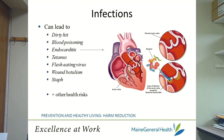Flesh-eating virus or necrotizing fasciitis is from blood-to-blood contact when sharing needles or through contaminants in black tar heroin. Symptoms include redness, pain, and swelling on the site, and eventually decay of flesh around the injection site. It needs to be treated with antibiotics early on because it can be fatal.